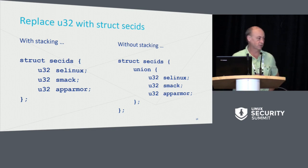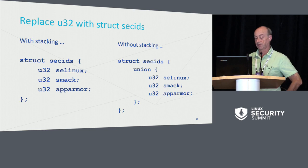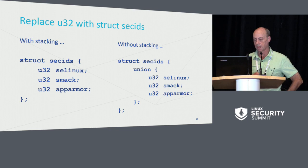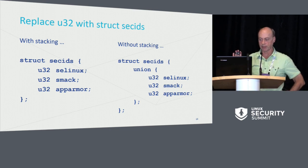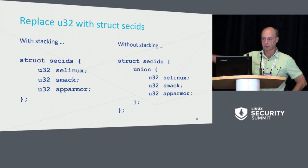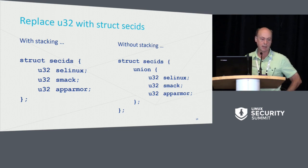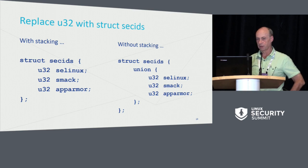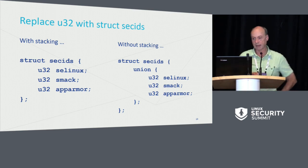It's called a struct SecID — I've called it a Strix SecID, it could be called anything else. You provide an entry in this structure for each of the security modules that actually uses it. If you're not going to use stacking, you don't really want to have that overhead. So instead of having a structure, you have a union. In the union, when it actually gets created, you still have a 32-bit quantity — so you're back to where you were if you're not doing stacking. We don't want to put excessive overhead in place where we don't have to.